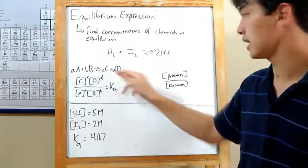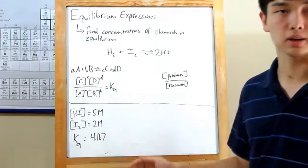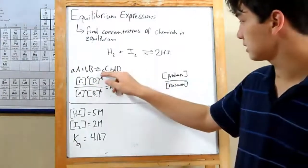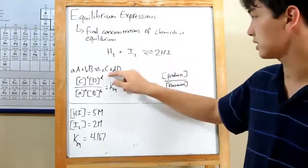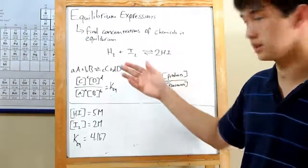The capital letters represent any chemical you could throw in, and the lowercase ones represent their coefficients. For example, this CC might represent 2HI, where HI is your capital C, and the 2, the coefficient, is the lowercase.